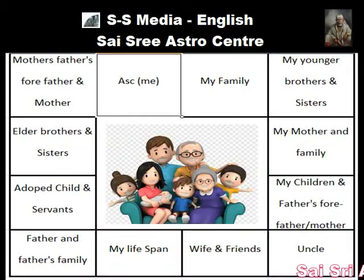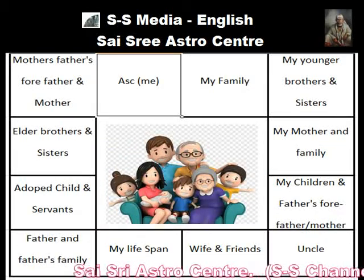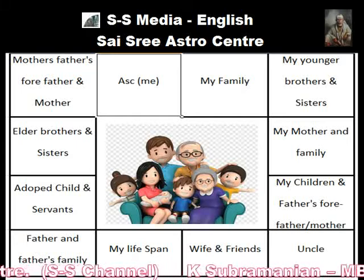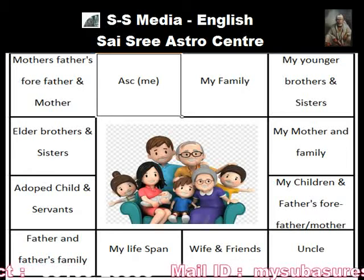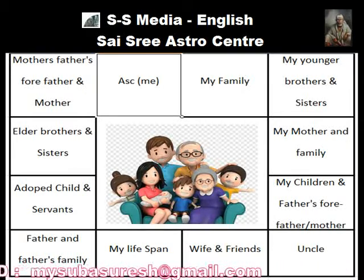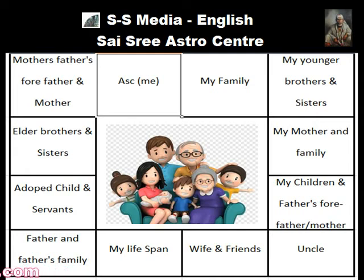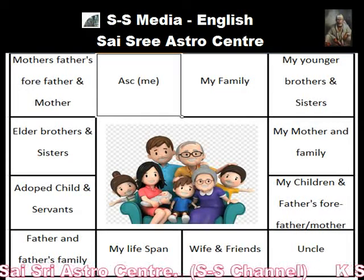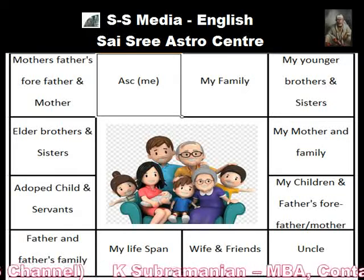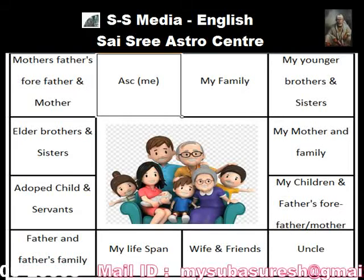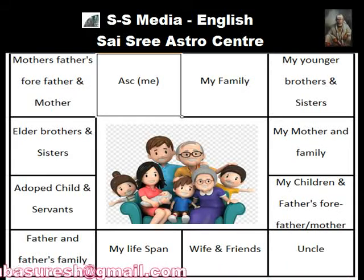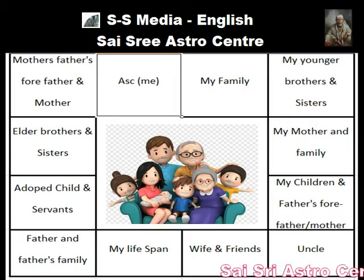The first house we generally call the Ascendant. It is my personal house and it indicates the characteristics of the chart holder. The second house indicates the family of the chart holder — my family or the person who is holding the chart. The third house denotes the younger brothers and sisters of the chart holder. We can say how they behave with me — whether my younger siblings will be helpful to me or not. All these things can be predicted through the third house.